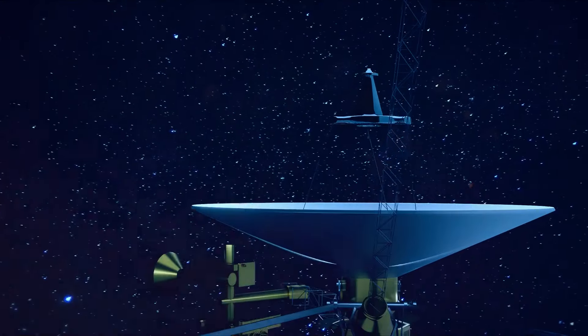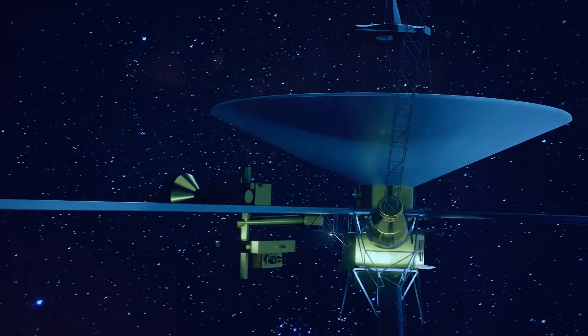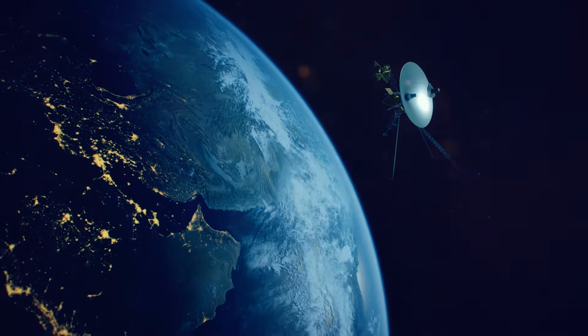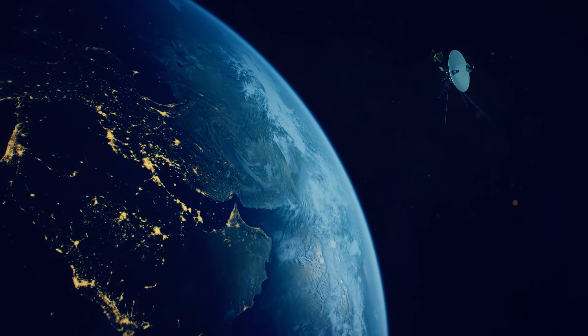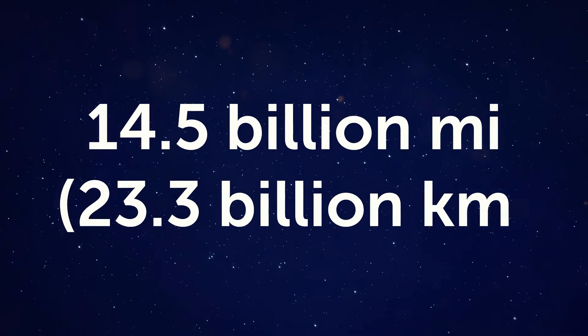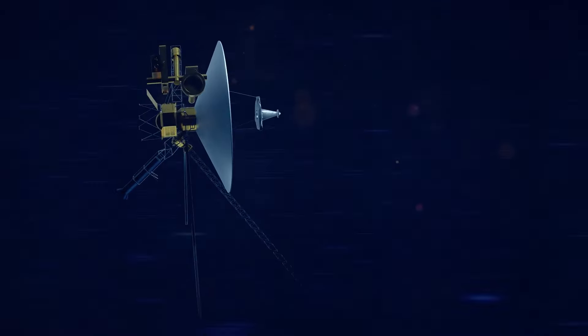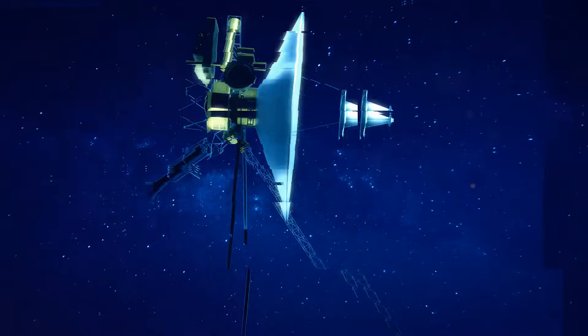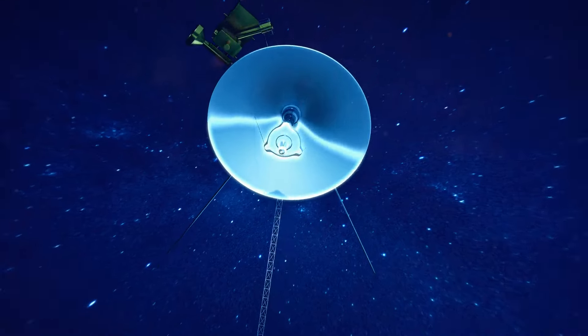They added Earth's coordinates, which they created using a pulsar map. The record was packed in an aluminum case and covered with gold to protect it against radiation and cosmic dust. Carrying this record, Voyager 1 set off on its long journey. And it has already traveled quite a distance. Right now, Voyager 1 is 154 astronomical units away from us. That's about 14.5 billion miles.